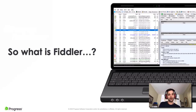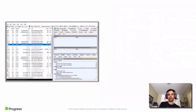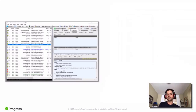Fiddler has been around for a while - the first version was released more than 15 years ago, and the UI kind of gives that away. While Fiddler is best known as a tool for debugging desktop and web apps, you can pretty much inspect network traffic on any app or device that supports a network proxy.